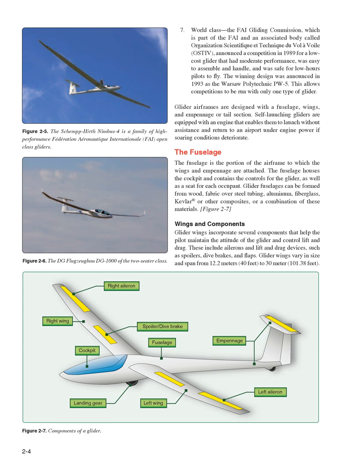Glider airframes are designed with a fuselage, wings, and empennage or tail section. Self-launching gliders are equipped with an engine that enables them to launch without assistance and return to an airport under engine power if soaring conditions deteriorate. The fuselage is the portion of the airframe to which the wings and empennage are attached. The fuselage houses the cockpit and contains the controls for the glider, as well as a seat for each occupant. Glider fuselages can be formed from wood, fabric over steel tubing, aluminum, fiberglass, Kevlar or other composites, or a combination of these materials.